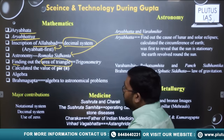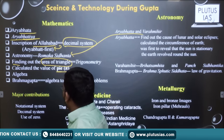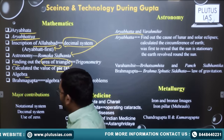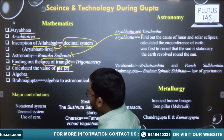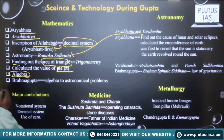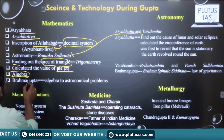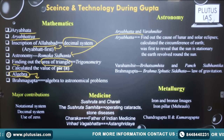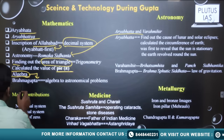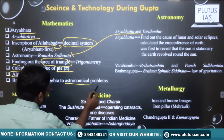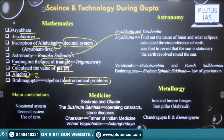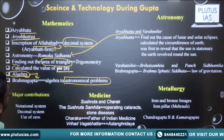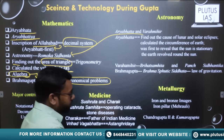Aryabhata is also the first person who calculated the value of pi. He used algebra extensively, and this inspired Brahmagupta, another very famous mathematician of the time. Brahmagupta utilized algebra in his astronomical problems — algebra was especially developed by Aryabhata and then further used by Brahmagupta in astronomical calculations.